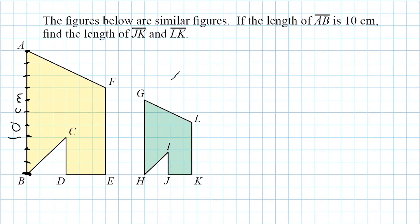So the first thing I'm going to do is using this given information of 10 centimeters, I'm going to find its corresponding side, which is line segment GH over here. And we can see that the length of GH is 1, 2, 3, 4, 5, 6.